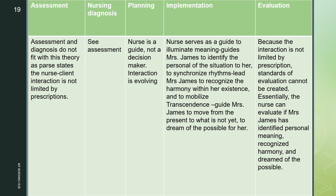The nurse guides Mrs. James to identify the personal meaning of her situation, to synchronize rhythms and recognize harmony with her existence, and to mobilize transcendence — guiding her to move from the present to what is not yet, to dream of the possible for her. The themes from Parse's theory are applied here. In evaluation, because interaction is not limited by prescriptions, standards cannot be created; essentially the nurse evaluates whether Mrs. James has identified personal meaning, recognized harmony, and dreamed of the possible.